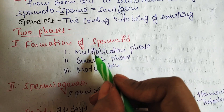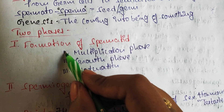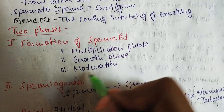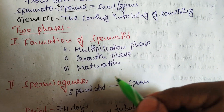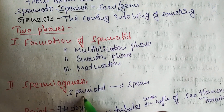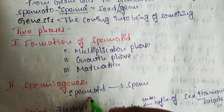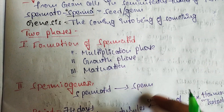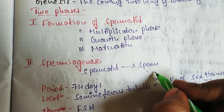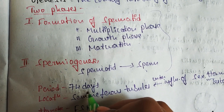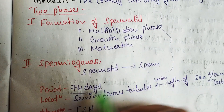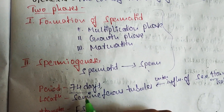Spermatogenesis is done in three phases: one is multiplication phase, the second is growth phase, and the third is maturation phase. Spermiogenesis means the formation and changes of spermatids into sperm. This total process is completed in 74 days.